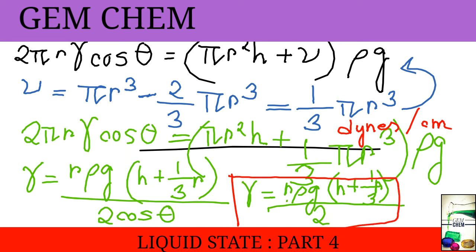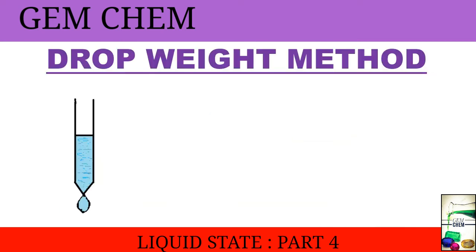Now, we will go to our next method which is relatively easy and we will discuss it in short way. This is drop weight method. In this when a drop of liquid is at a point of being detached from the circular end of a vertical capillary tube, the upward and the downward forces are balanced by one another. The upward force is actually 2πr gamma.